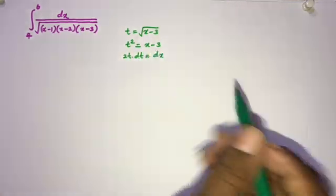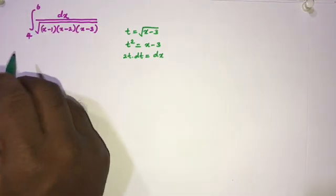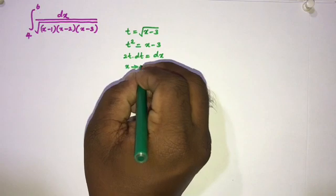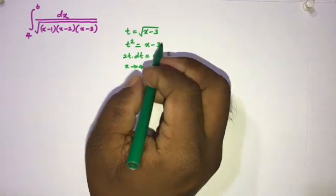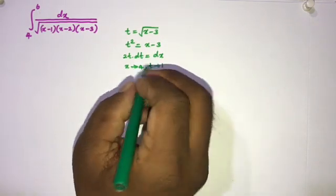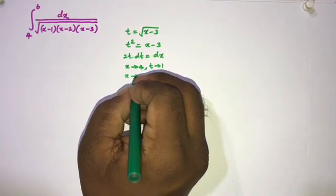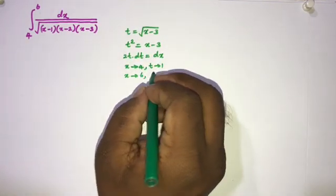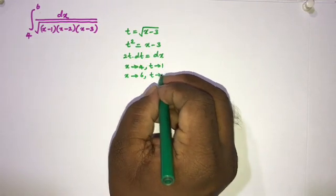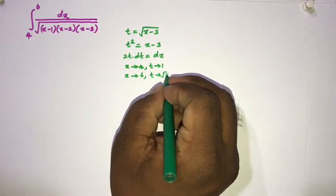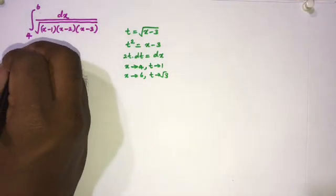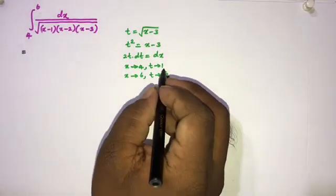Now we should change the limits. When x approaches 4, the lower limit gives t approaching 1. For the upper limit, when x approaches 6, t approaches the square root of 6 minus 3, which is the square root of 3.